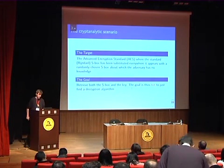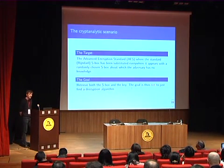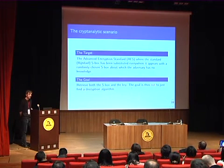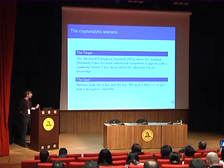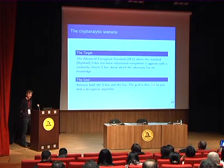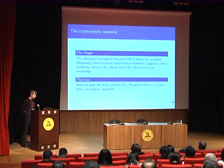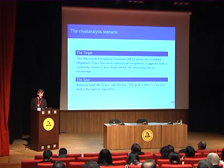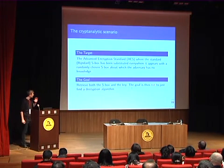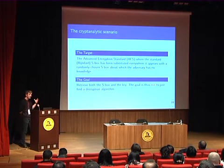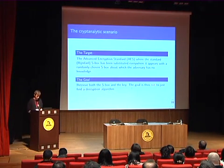So what is the setting we are looking at? The target is the standard AES where we substitute the SBOX — the Rijndael SBOX — everywhere it appears in the cipher with a secret SBOX of which we assume the adversary has absolutely no knowledge. Our goal is then to retrieve both the SBOX and the key. The goal is not just to find a decryption algorithm; we actually want to uncover the SBOX itself.